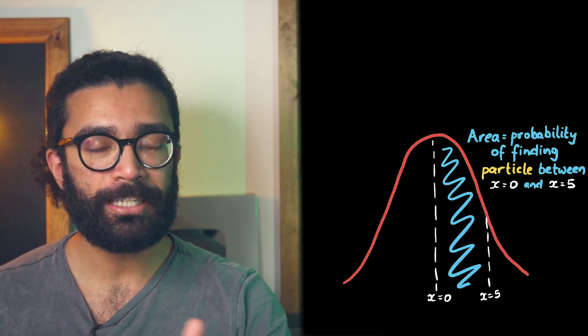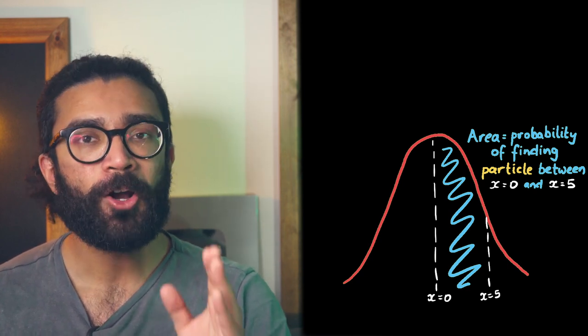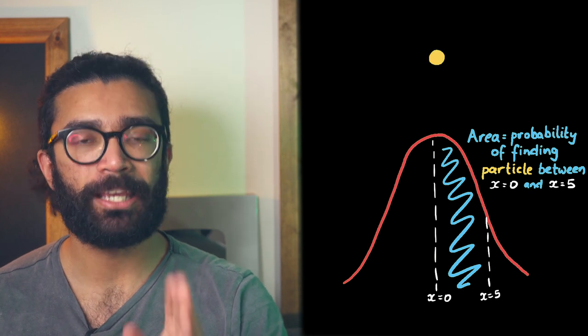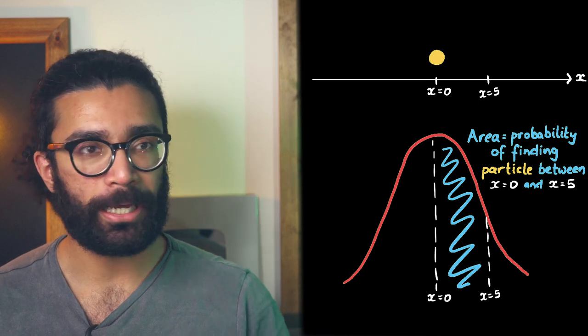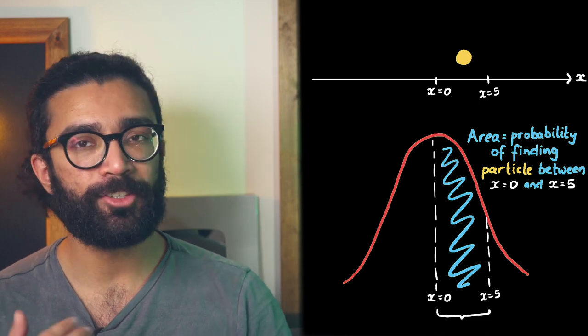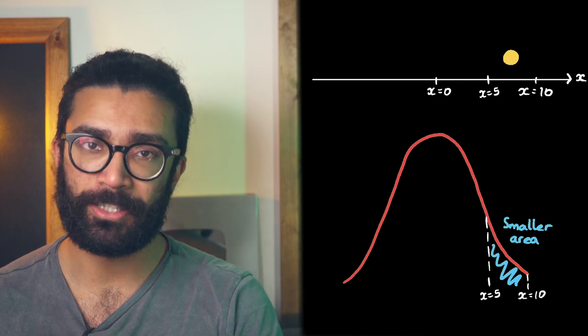And that area directly tells us the probability of us finding the particle in this region of space. So in this particular example our particle is more likely to be found between these two points than between these two points.